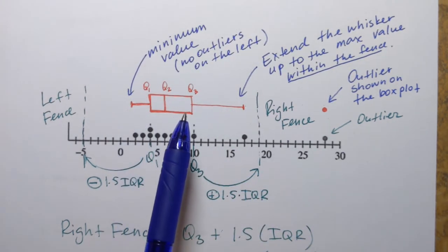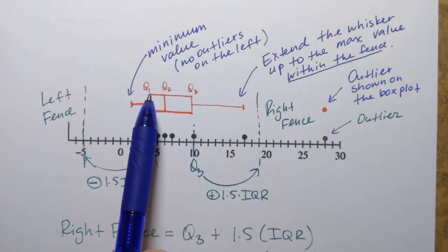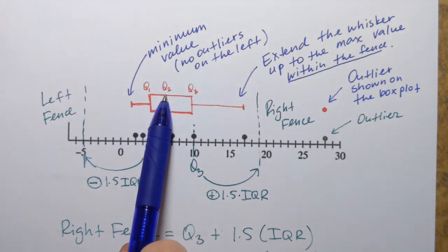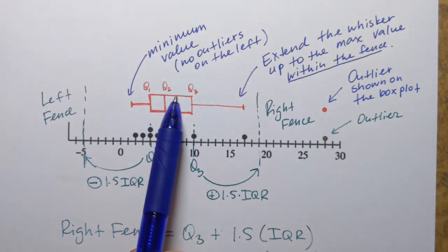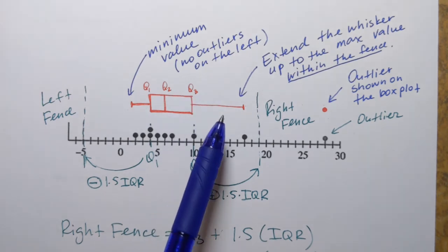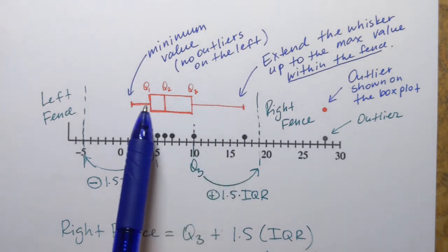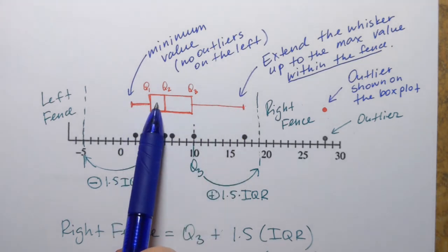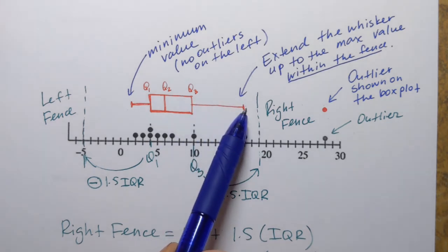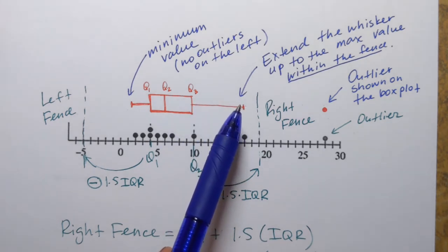And as we already observed, a box plot is identified by five important values of the data set. And they are Q1, Q2, which is same as the median Q3, and also minimum value and maximum value that are not the outliers. And those five values, one, two, three, four, five, are called five number summary of a data set.